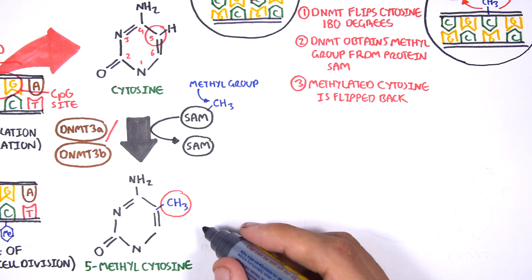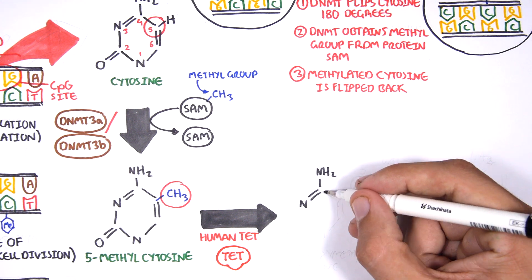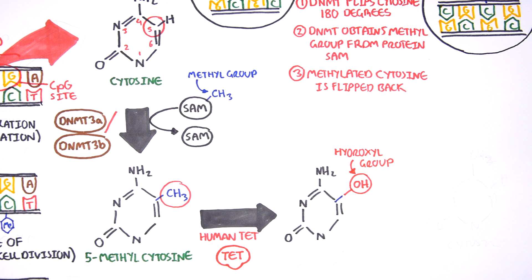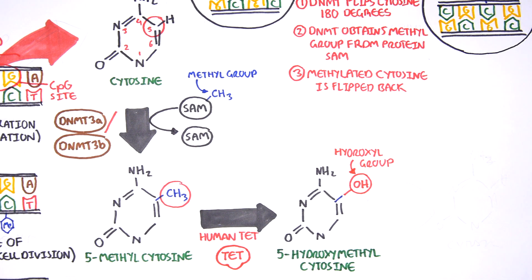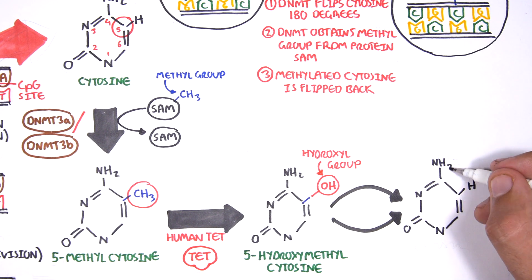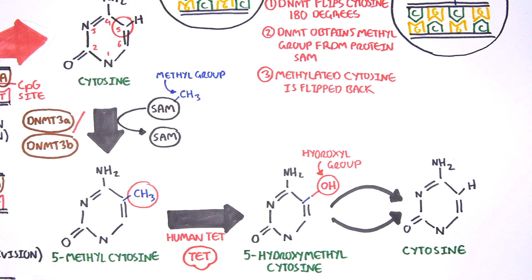Human TET, which stands for human 10-11 translocation, is another important enzyme that has a role in regulating DNA methylation patterns. TET is responsible for adding a hydroxyl group initially to 5-methylcytosine, forming 5-hydroxymethylcytosine. The TET enzyme is also able to convert 5-hydroxymethylcytosine back to cytosine through several pathways. Therefore, TET enzymes are thought to be responsible for DNA demethylation.